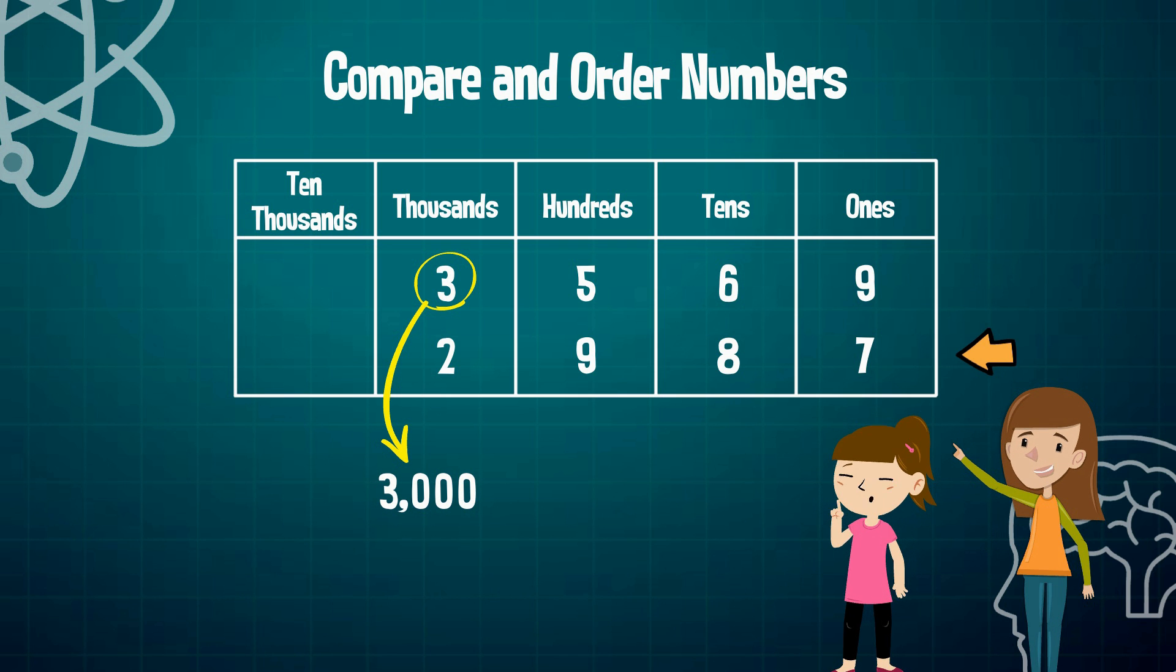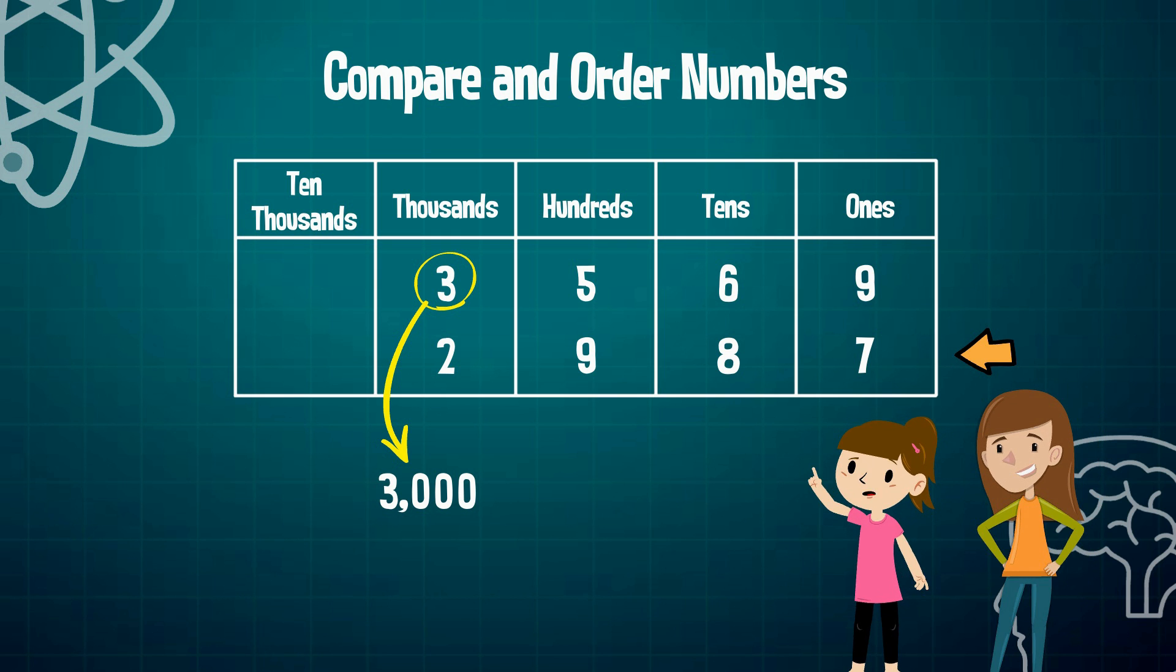And how about the number 2987? Which digit in 2987 has the greatest value? That's easy too. The digit 2 has the greatest value because it's also in the thousandth place, and it has a value of 2000.